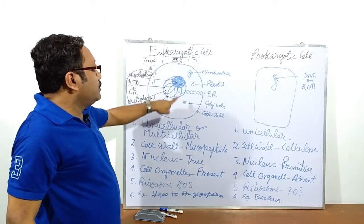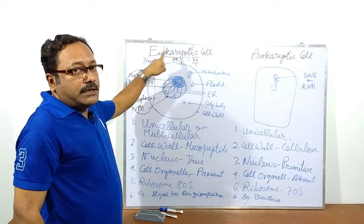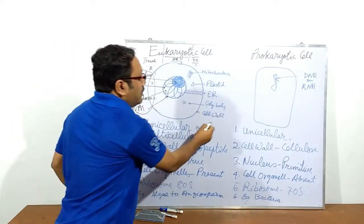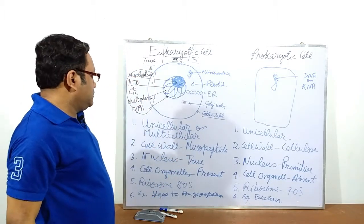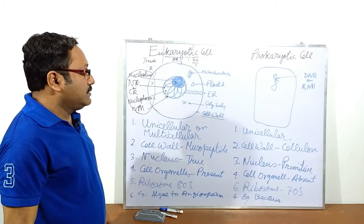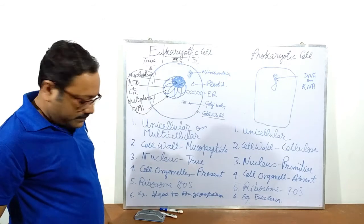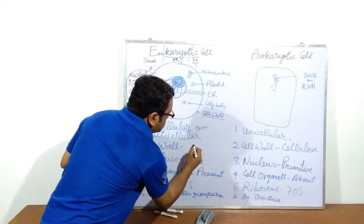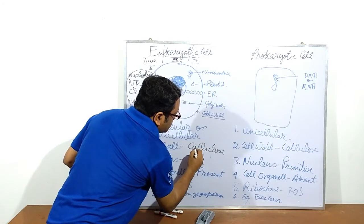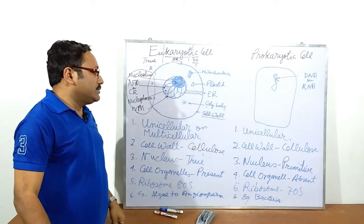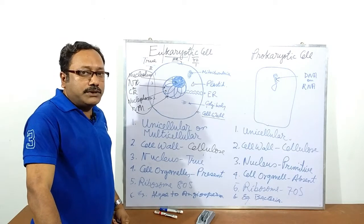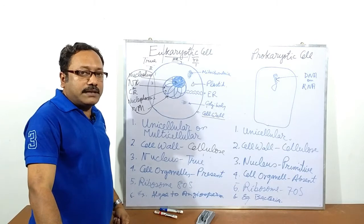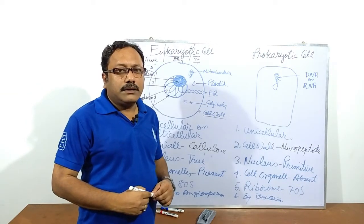So all four components are present in the true nucleus. If in a cell a true nucleus is present, then that cell is called a eukaryotic cell. The cell wall of the eukaryotic cell is composed of cellulose. In most cases, apart from cellulose, pectin, hemicellulose, lignin, and suberin are also present.